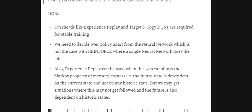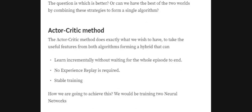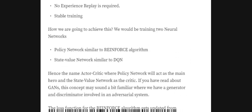So we have seen problems with both value-based methods (DQNs) and policy networks (REINFORCE). Can we combine these two models to overcome all these problems and get the best of both worlds? Yes! We will be discussing the Actor-Critic method, which is a hybrid of DQNs and REINFORCE. What we gain from the Actor-Critic method is: we learn incrementally without waiting for the whole episode to end, there is no experience replay, and training is also stable.